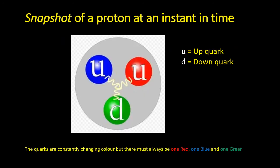This diagram here just shows the proton, the two up and down quarks bound together in a proton. And as I said before, there must always be one red, one blue and one green.